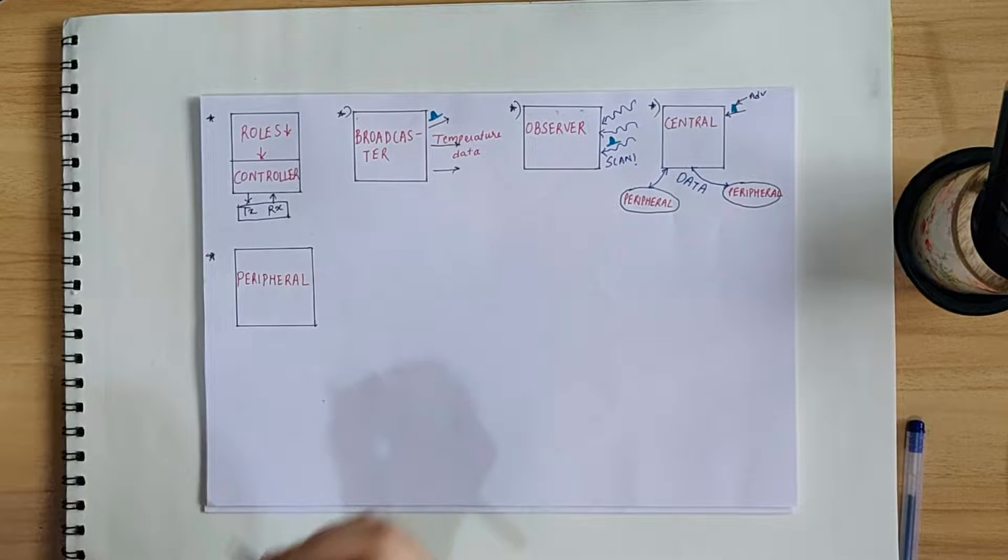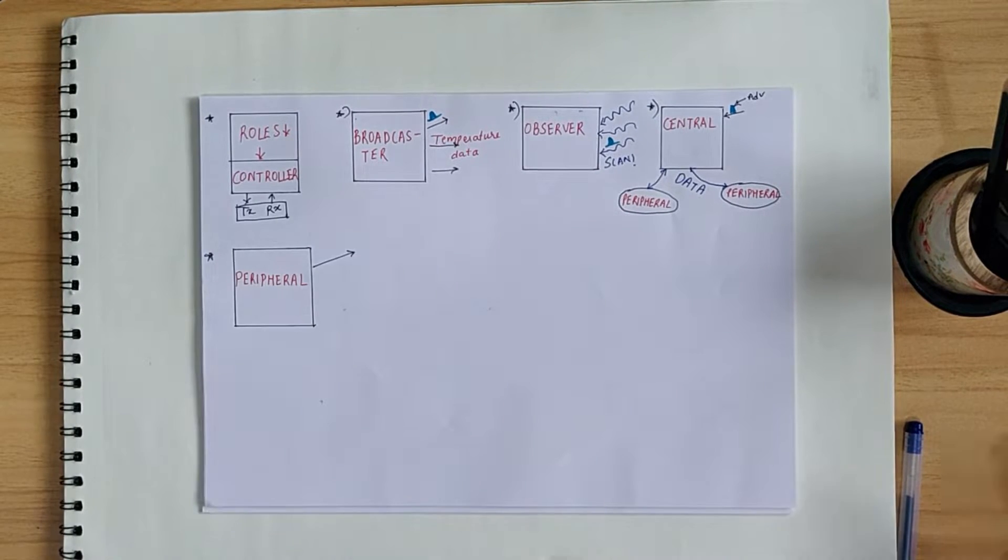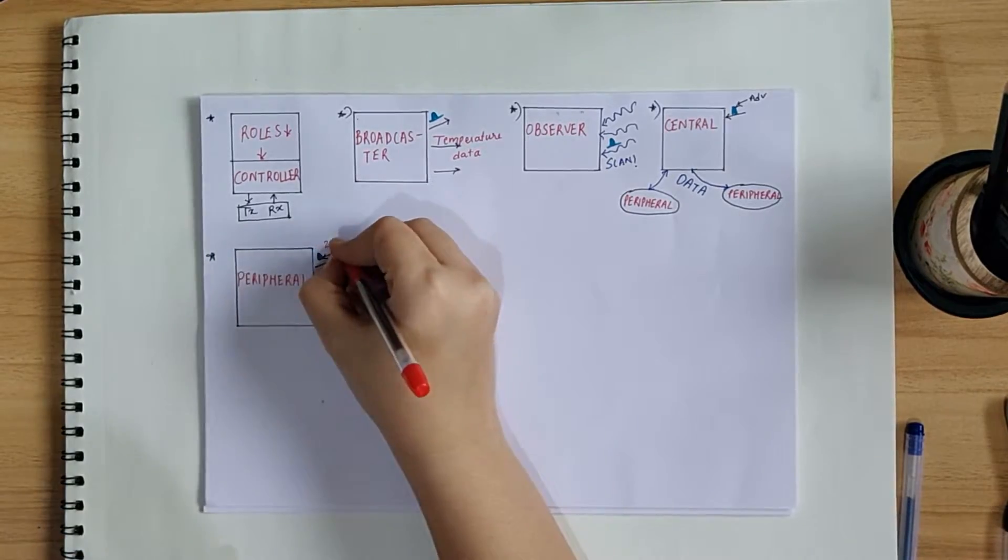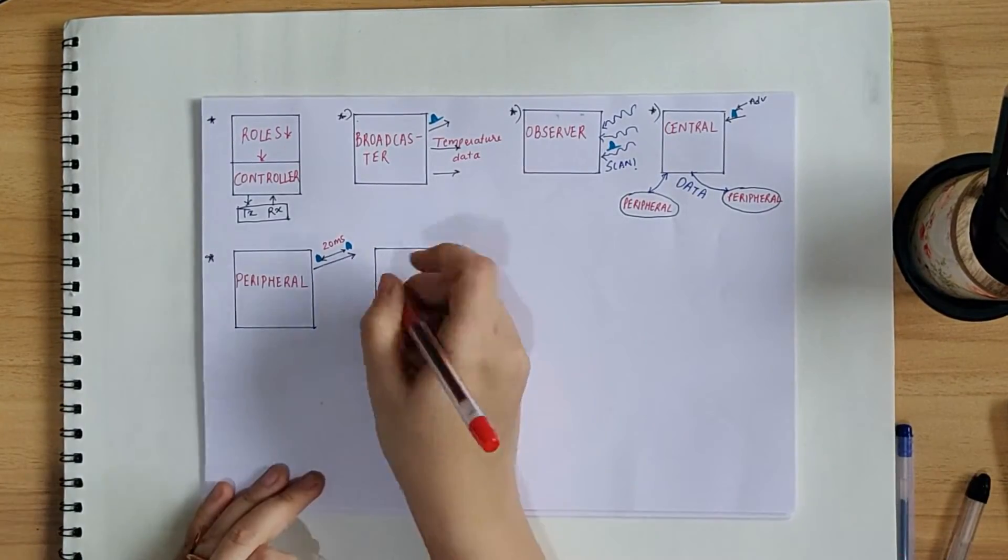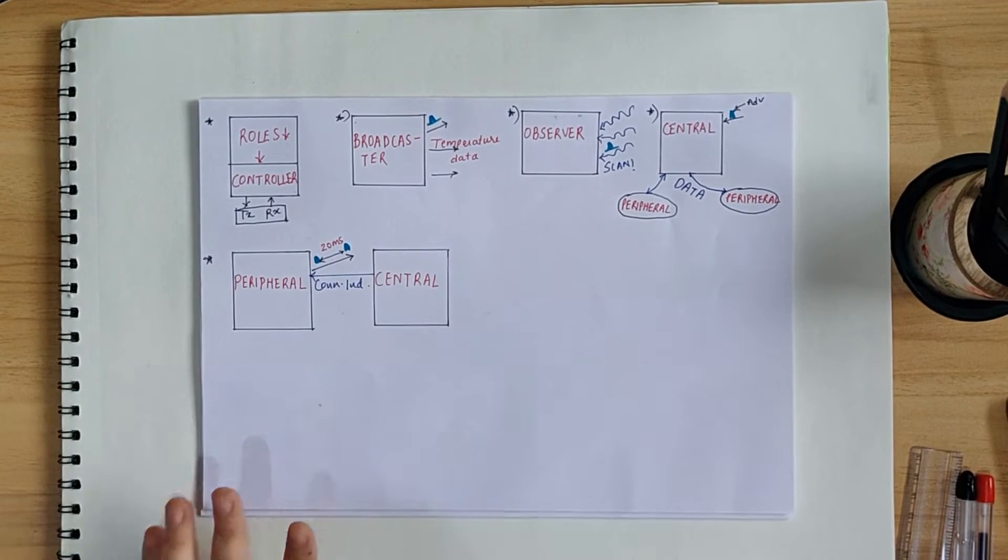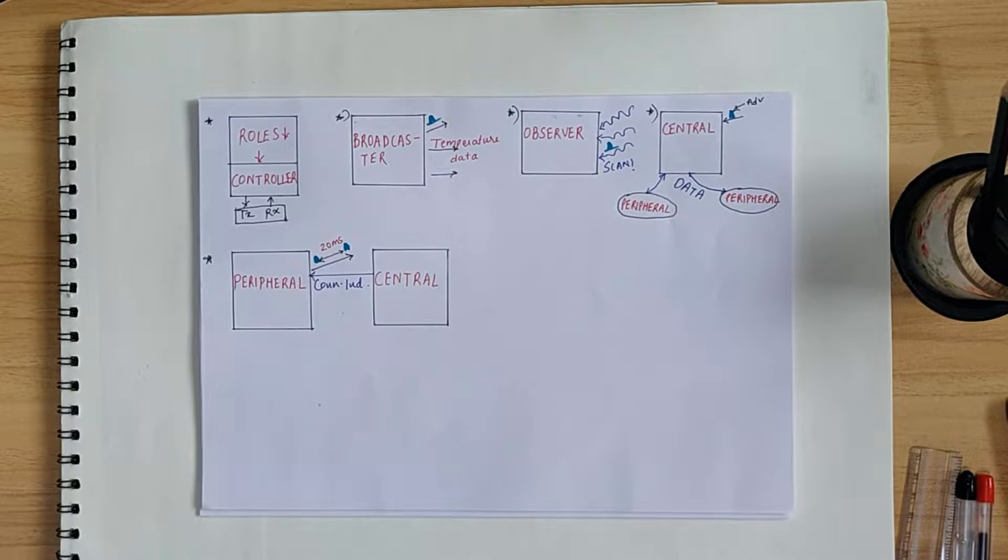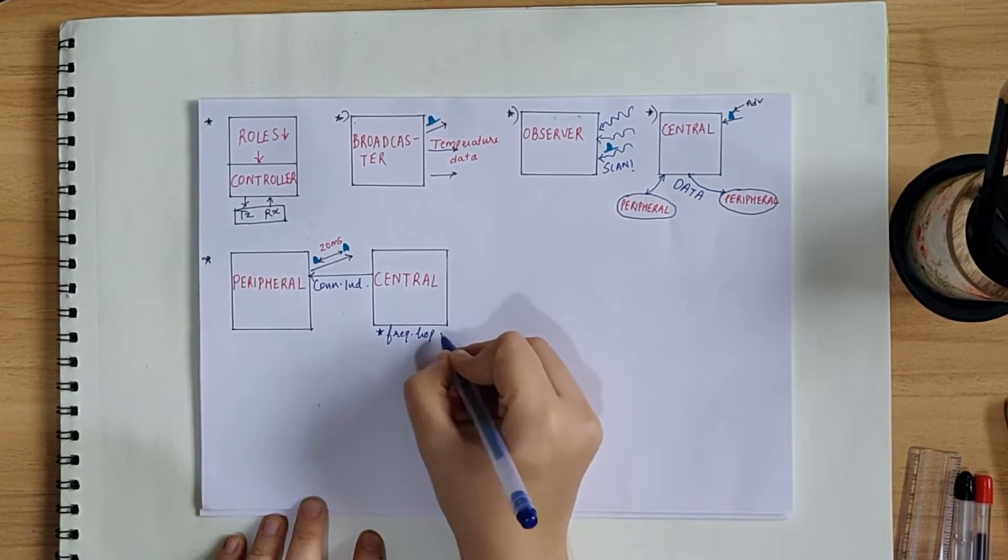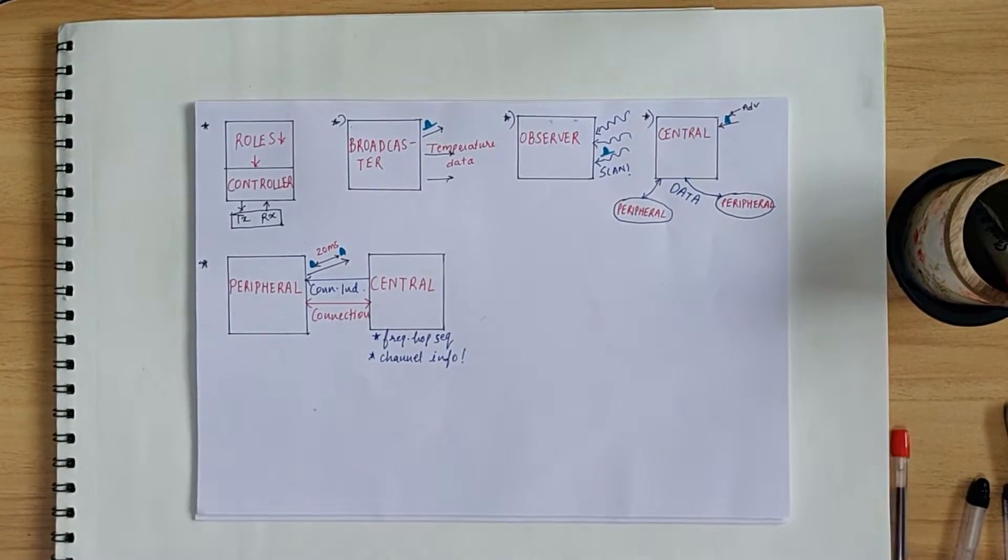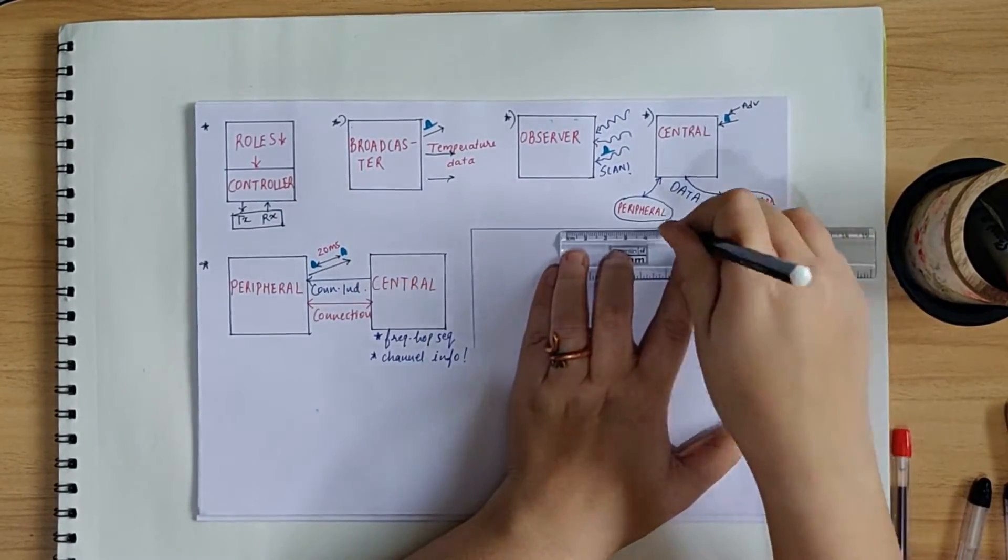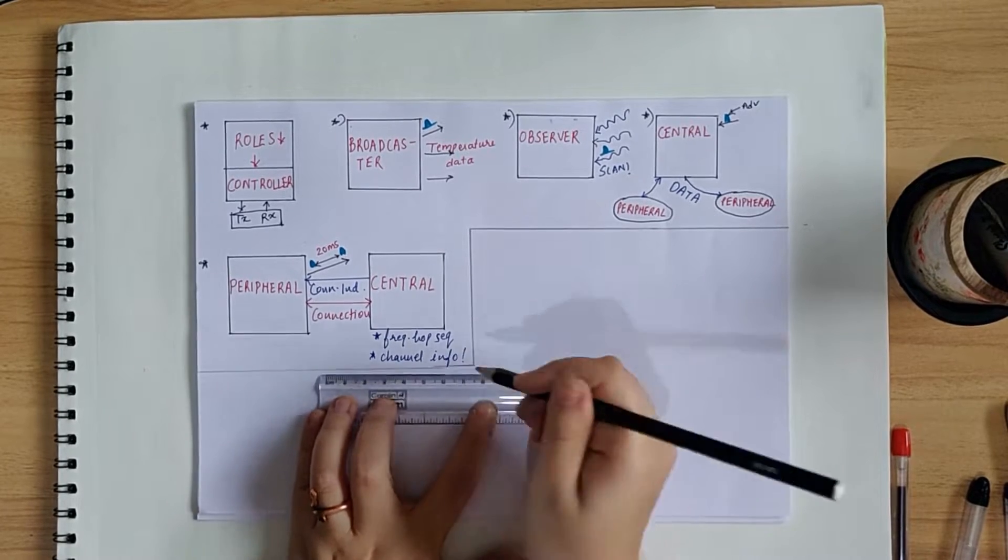Now, let's have a quick look at how the connections are established between the central and the peripheral. Peripheral keeps on sending its advertisement, say, every 20 milliseconds. The developer can decide how many times advertisement message should be sent along with its content. If the central wants to get the data from the peripheral, it sends something called as a connect indication message on the advertisement channel, wherein it gives its frequency hop sequence and the channel that the peripheral needs to tune to. Then, a connection is formed where the peripheral tunes its receiver to the specified channel and starts listening.